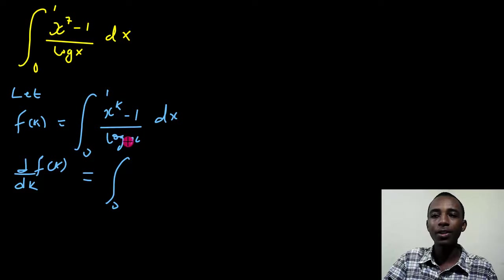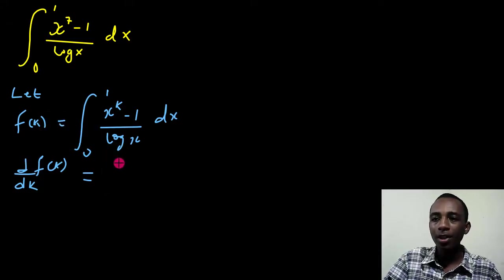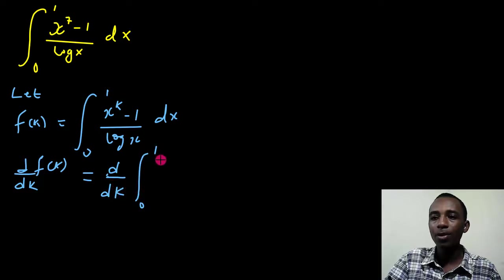Then I'll have, I could have put this derivative here, of course. I think I should do that just to show you that I've put derivatives on both sides. So same thing here, the derivative with respect to k of the integral from 0 to 1 of x to power k minus 1 divided by log x dx.